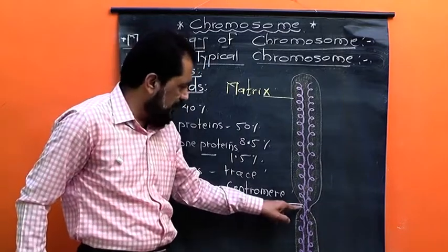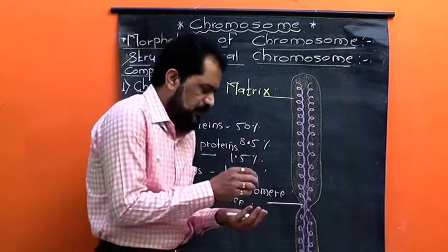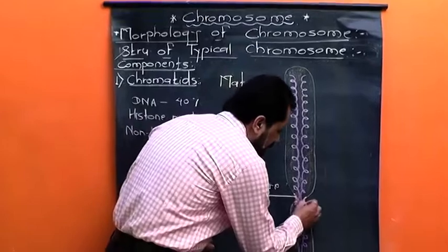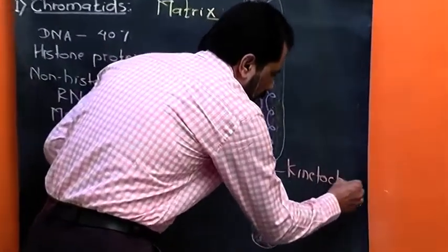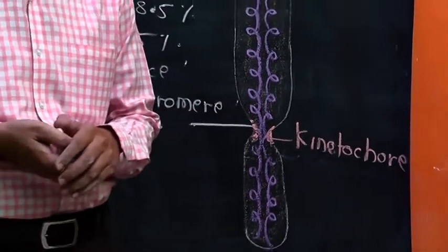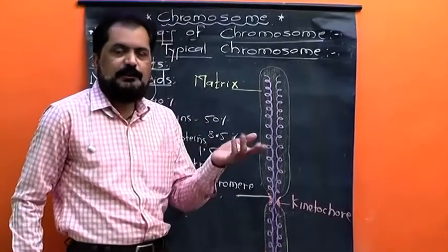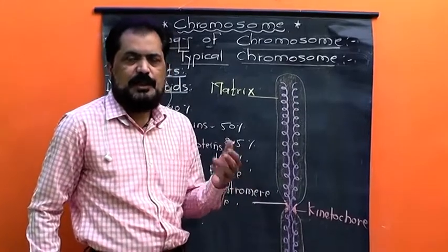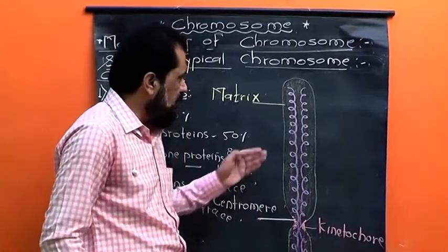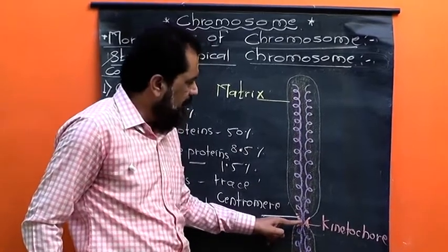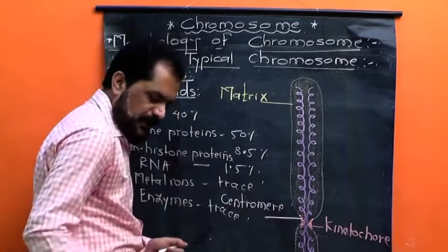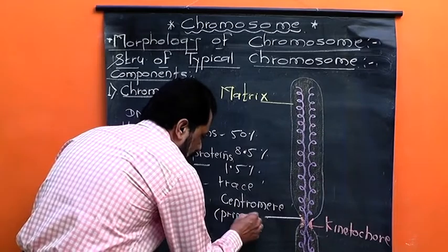At the centromere, each chromatid shows a small plate-like structure called the kinetochore, to which the spindle fibers or spindle tubules join at the time of cell division. At this region the chromosome appears slightly narrow and constricted, and therefore the centromere is also known as the primary constriction.